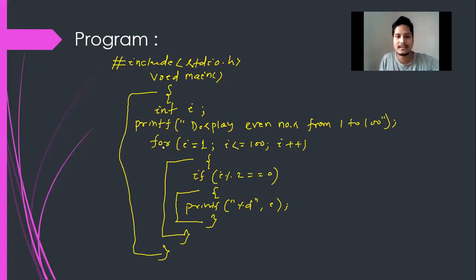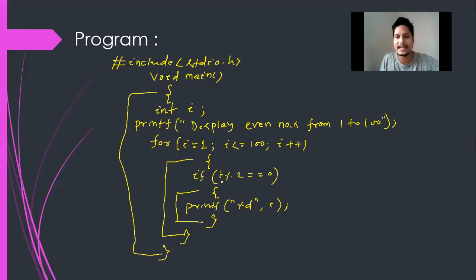Here you can see I have used the for loop. Inside the for loop, the value of i starts at 1 and it will check from 1 to 100. Within the for loop, I have used an if statement and inside the if statement I have used the condition i modulo division 2 equal to equal to 0. It means if i modulo 2 equals 0, the number will be even.